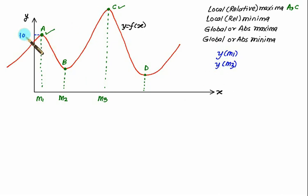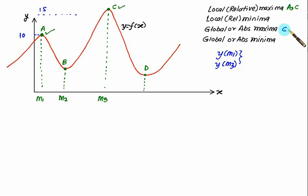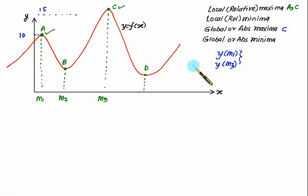it is clearly seen that y at m1 is a lower value compared to y at m3. So naturally, out of these two maxima, the higher value is at m3 corresponding to point c — that particular value is called global or absolute maxima. So out of two relative maxima, one value will be the global maxima.